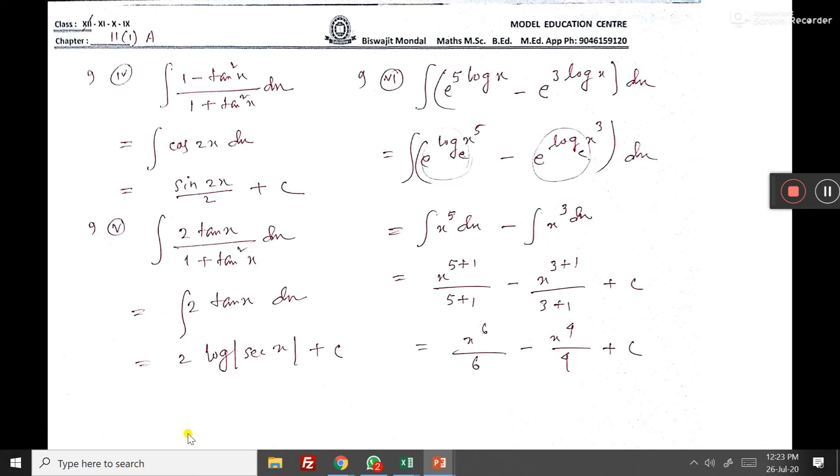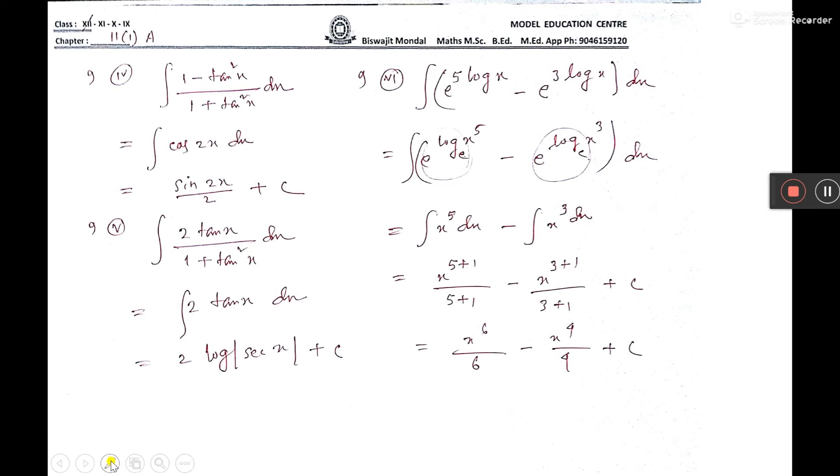This is the formula of cos 2x. In class 11, you have learned that (1 - tan²x)/(1 + tan²x), the formula is cos 2x.